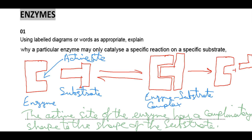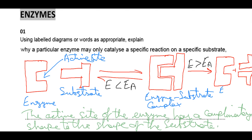We will make the products. When the energy available is greater than the activation energy, product formation will occur. It will become a complex due to collision, but it will not become a product when the activation energy is not available. Then the substrate will go out and both will be separate. We will write here: enzyme regenerated.